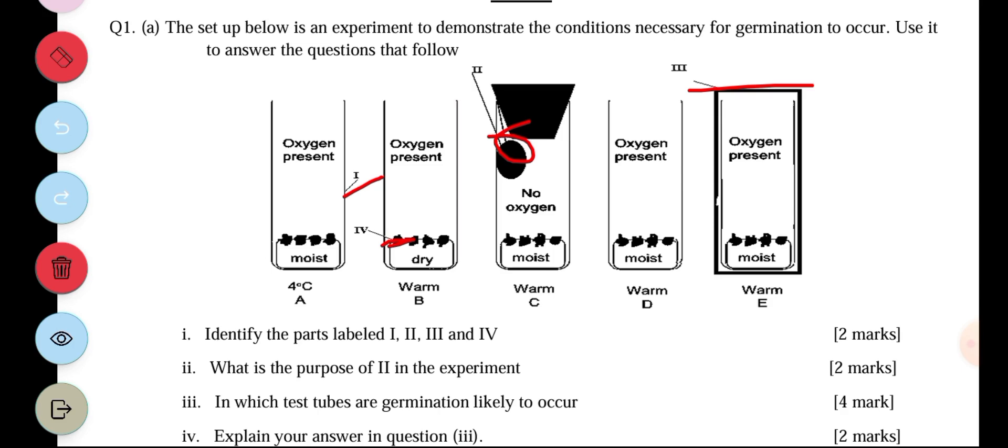Then part two says: what is the purpose of II in the experiment? The purpose of II in the experiment is to remove oxygen from the test tube.